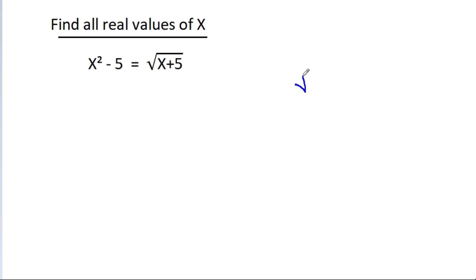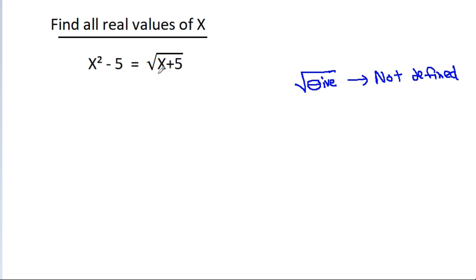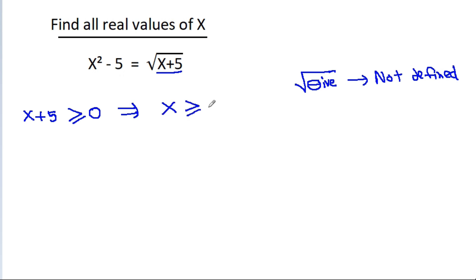The square root of a negative number is not defined. So x plus 5 should be greater than or equal to 0. That means x should be greater than or equal to minus 5.